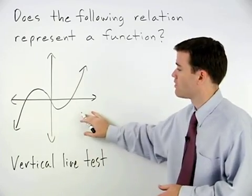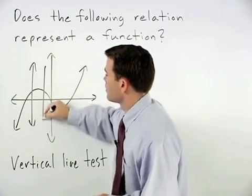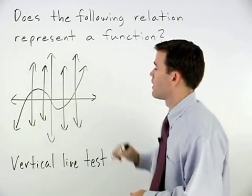Notice that in this problem, there's no way to draw a vertical line that passes through more than one point on the graph.